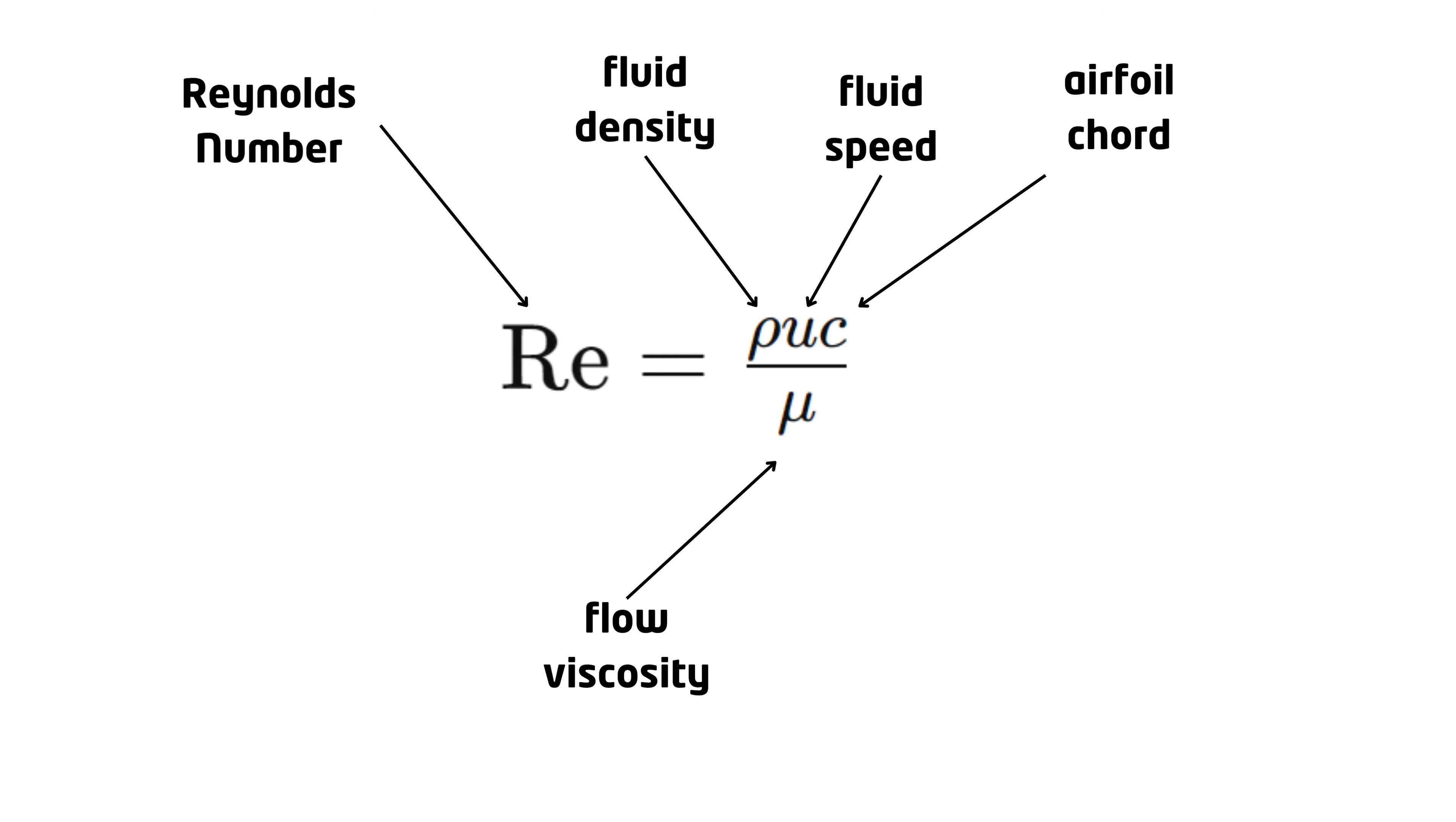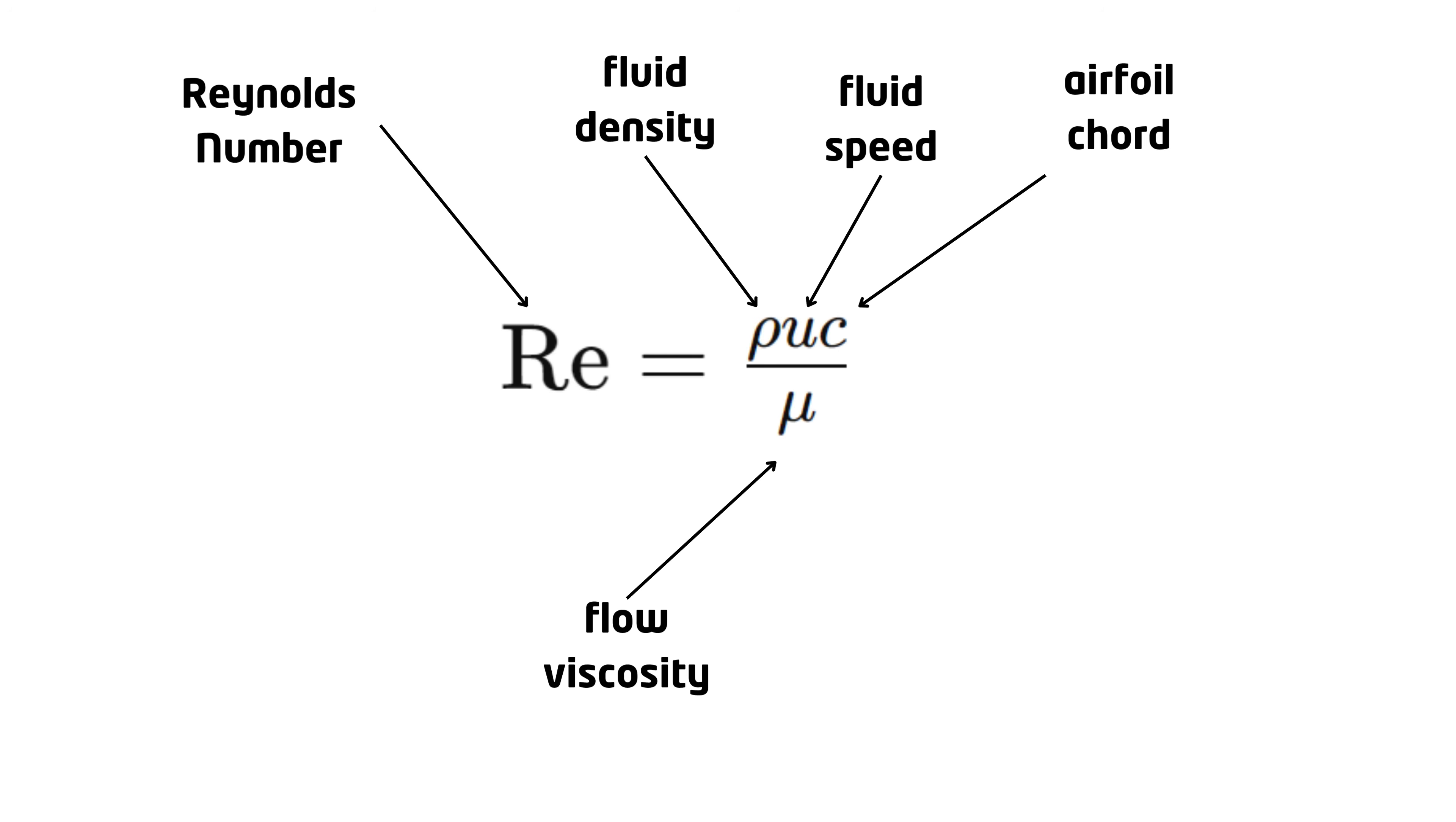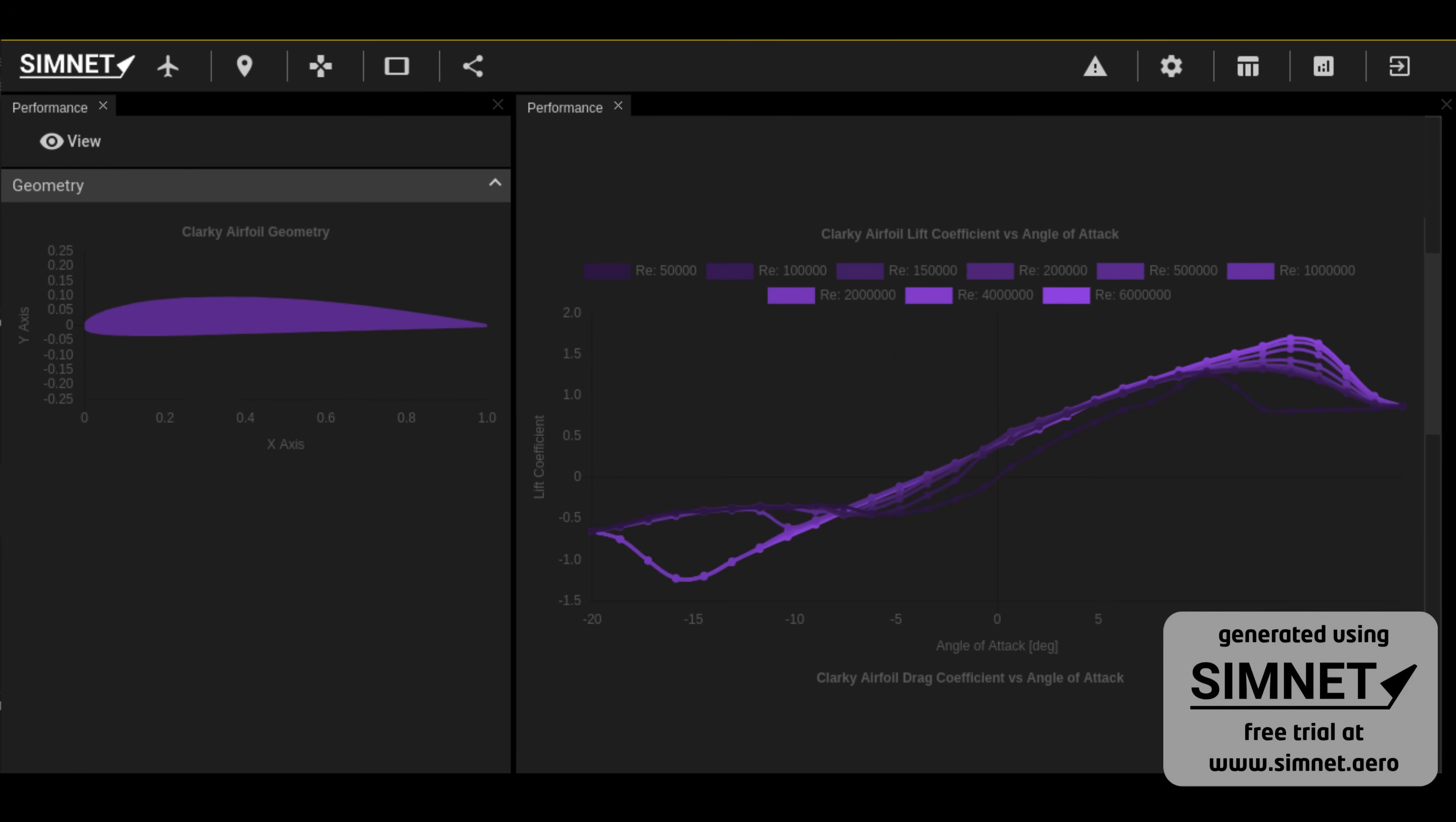We have seen how the lift and drag coefficients are a function of the angle of attack of the airfoil. Now we will see how they are also a function of the Reynolds number of the flow. Let's revisit the lift and drag coefficients of an airfoil, this time considering their dependency on the Reynolds number and angle of attack. In this plot, lines with higher Reynolds numbers are colored with a brighter shade of purple. We can see that higher Reynolds numbers tend to postpone the onset of stall to greater angles of attack and enable higher lift coefficients. Therefore, smaller airfoils are more susceptible to stalls, especially at low flow speeds, because of the lower Reynolds number.